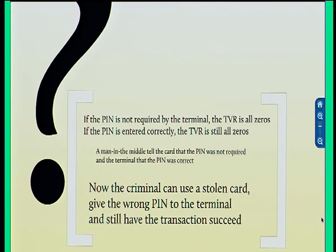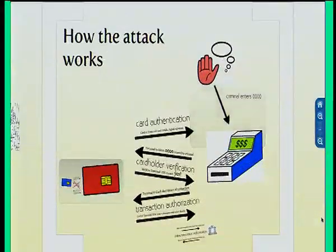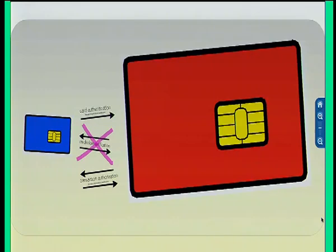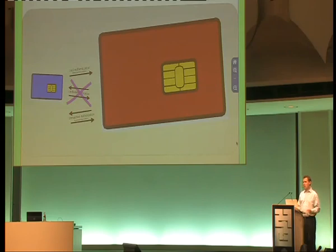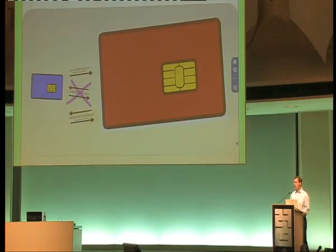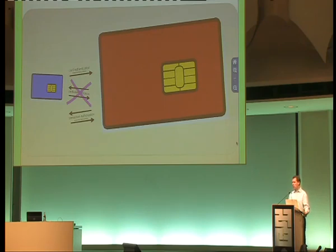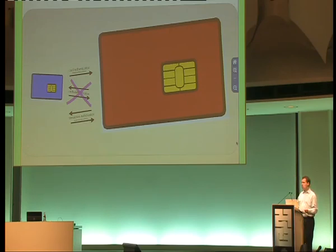What this allows criminals to do is steal a card they don't know the PIN for, but still make the bank think the PIN was entered correctly. To actually do this, we built hardware for the man-in-the-middle attack — an FPGA board for the low-level electrical interface and a PC running Python scripts for the software side. We put this all in a backpack. But in fact, it's very simple.